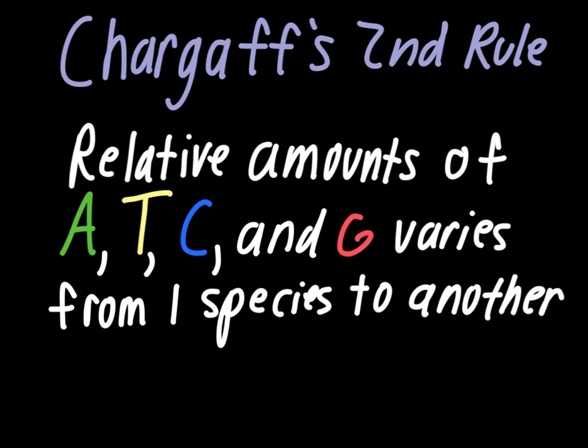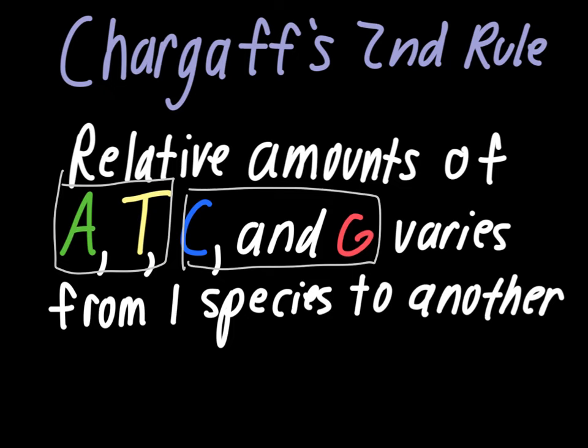Now his second rule — he found out that the relative amounts of adenine, thymine, cytosine, and guanine varied from one species to another. To clarify: adenine and thymine were still always going together, and cytosine and guanine were always going together. But he found different ratios of each pairing in different species — some species had more cytosine and guanine, while others had more adenine and thymine. So these two groups were not constant among species; they always went together, but their proportions differed. This detail turns out to be important, and we'll expand upon why.